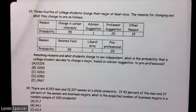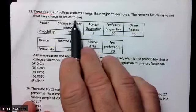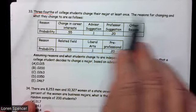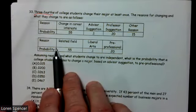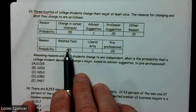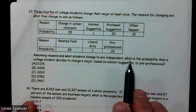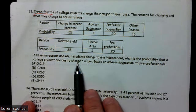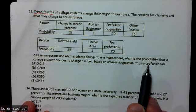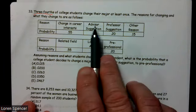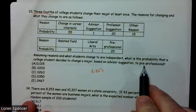Number 33. This one is tricky. Three-fourths. We're going to need to remember that. Of college students change their major at least once. Reasons for changing and what they are as follows. So we have a list of what they are. And here's what they changed to. Assuming reasons and what students change to are independent, what is the probability that a college student decides to change major based on an advisor's suggestion?